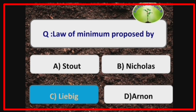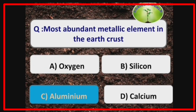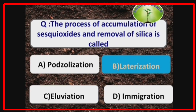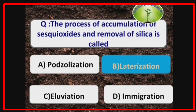The Law of Minimum was proposed by the scientist Liebig. Copper is the element essential for nodulation. The most abundant metallic element in the earth's crust is aluminium. The process of accumulation of sesquioxides and removal of silica is called laterization.